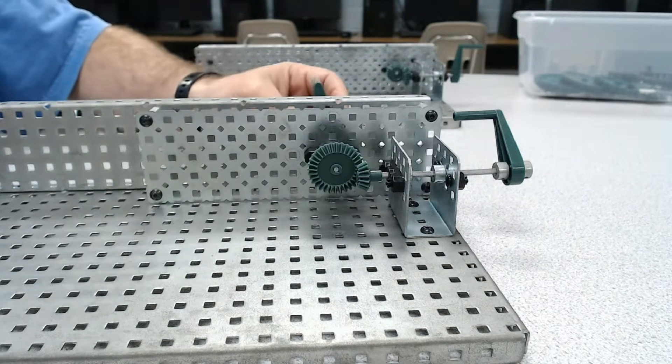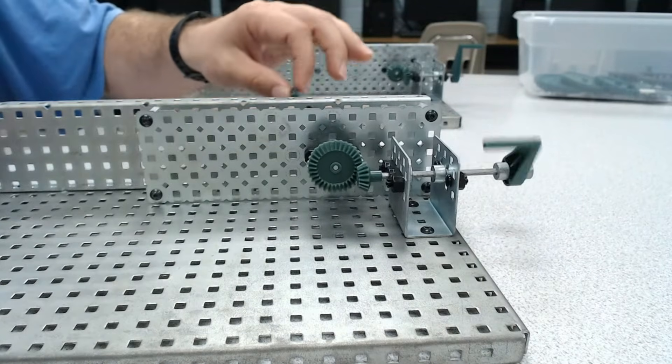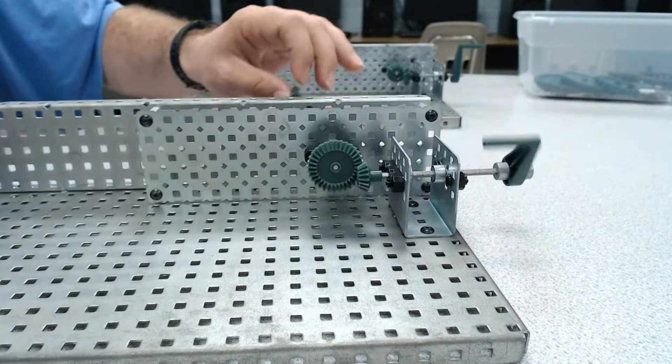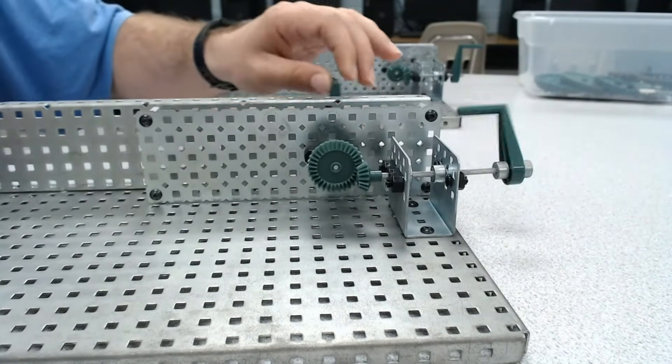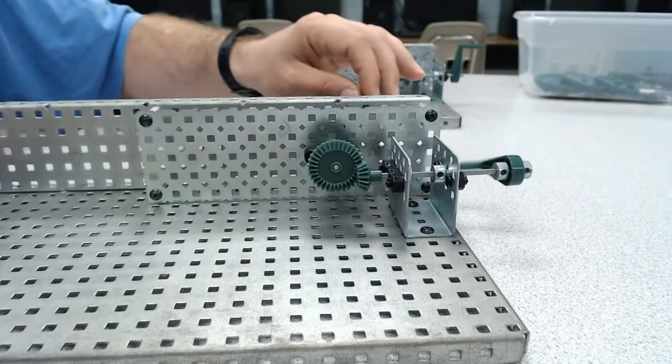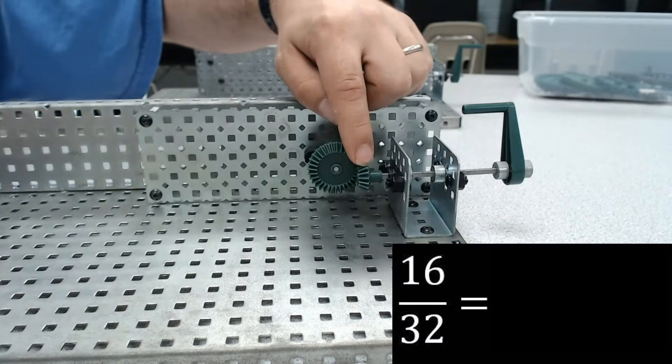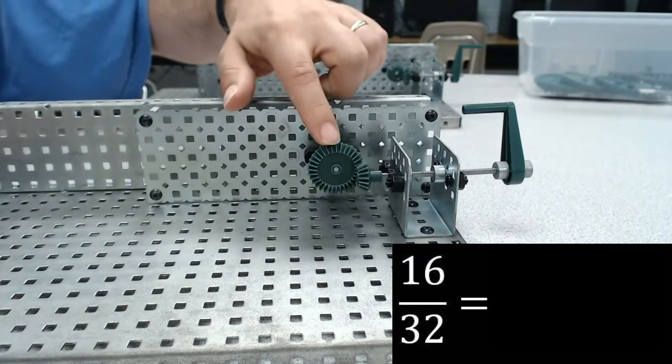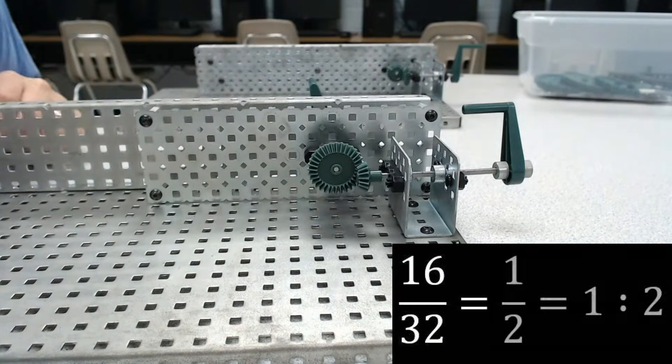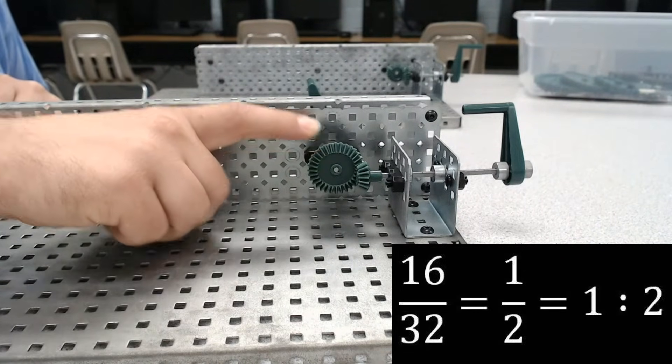If I wanted to gear for speed, I would actually need to turn this gear and make this my input. And here we can see that the output is going much faster. So what would be our gear ratio in this setup? Looking at it again, output's here. 16 divided by 32 means we have a 1:2 gear ratio—one rotation of our input gets two rotations of the output, meaning this system is geared for speed.